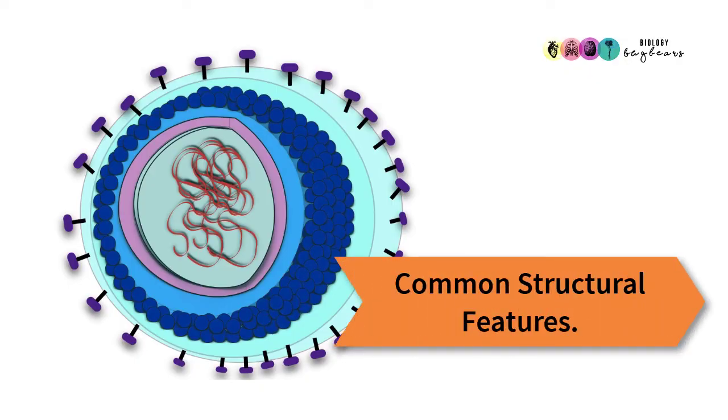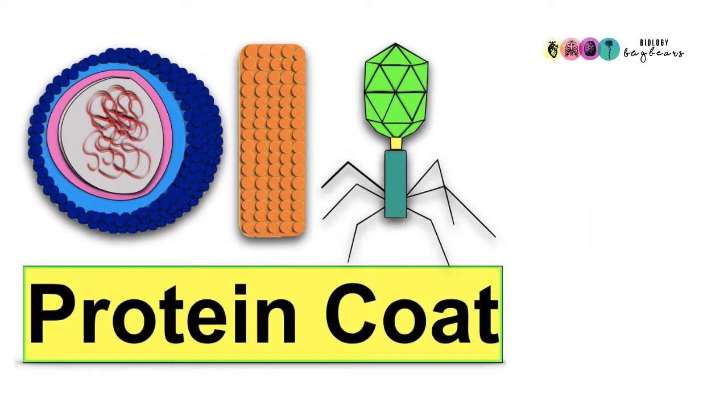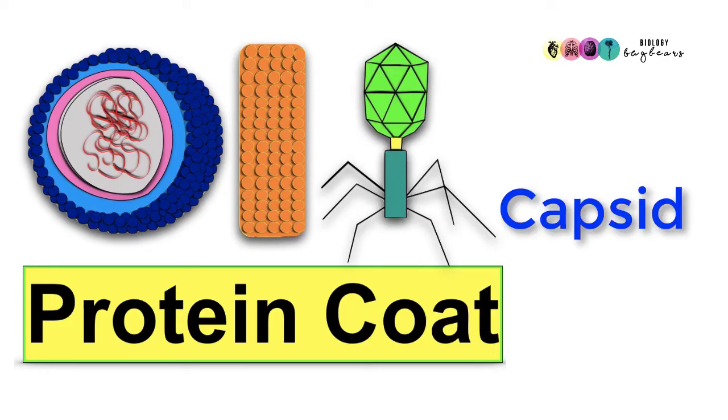It's very important to know that all viruses share some common structural features. The first is a protein coat, sometimes called the capsid. This protein coat is made up of different numbers of protein molecules depending on the particular virus, and it's the arrangement of these protein molecules that gives the virus its unique shape.